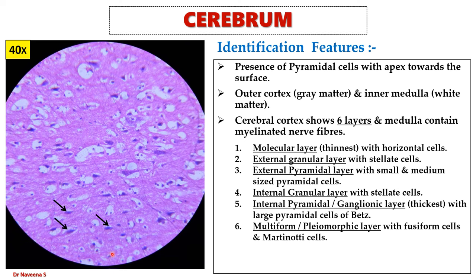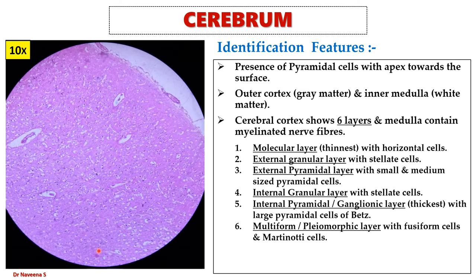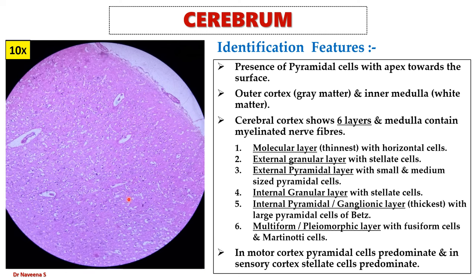Here is the medulla with nerve fibers and oligodendrocytes. Under low magnification, the different layers of the cerebral cortex can be identified by very few cells in the outermost two layers, small and medium-sized pyramidal cells tightly packed in the third layer, and large pyramidal cells or cells of Betz loosely packed in the fifth layer. Importantly, in motor cortex pyramidal cells predominate, and in sensory cortex stellate cells predominate.